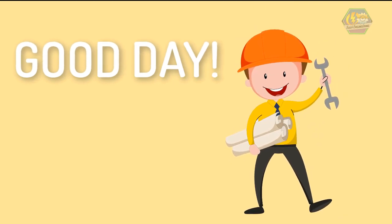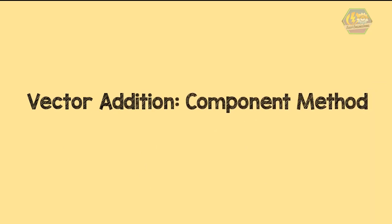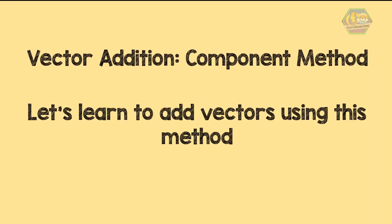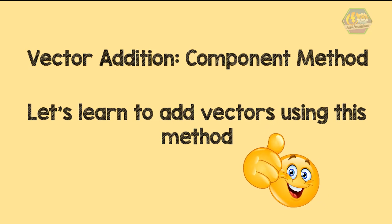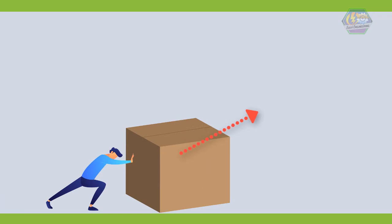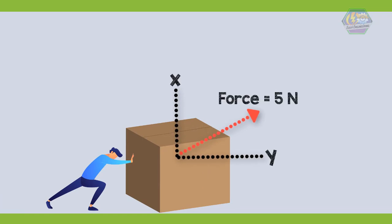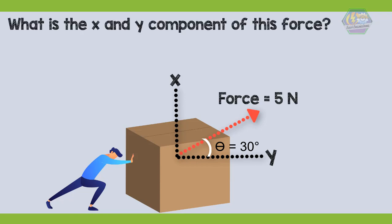Good day learners, this is Easy Engineering. This time we're going to talk about vector addition using the component method. In this video, we're going to learn how to add vectors using the component method — the most commonly used method in solving complicated problems involving vectors. Let us begin by solving the X component and Y component of a vector: a 5 Newton force applied to the box at an angle of 30 degrees counterclockwise from the positive X axis. What is the X and Y component of this force?